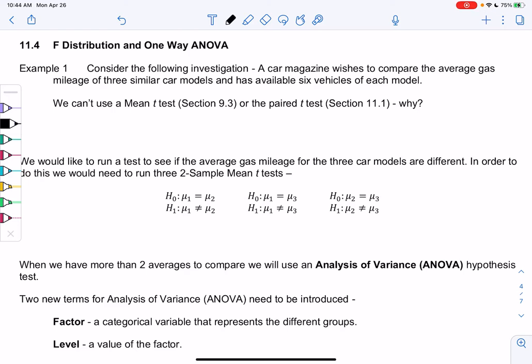Example one, consider the following investigation. A car magazine wishes to compare the average gas mileage of three similar car models, and each has six vehicles of each model. So we can't use our old tests, and there's a reason. I circled three on purpose. We can't use the mean t-test, that was Section 9.3, because that means we have only one sample.